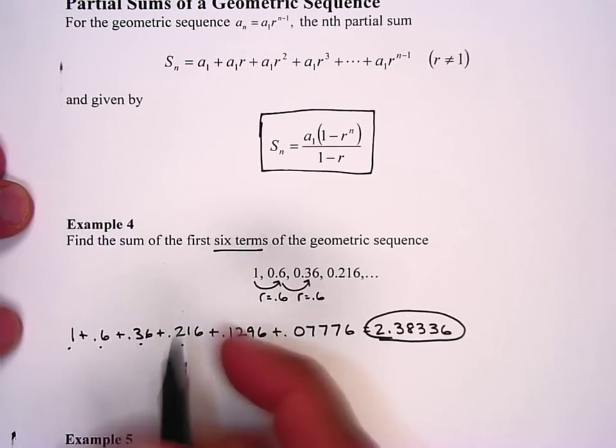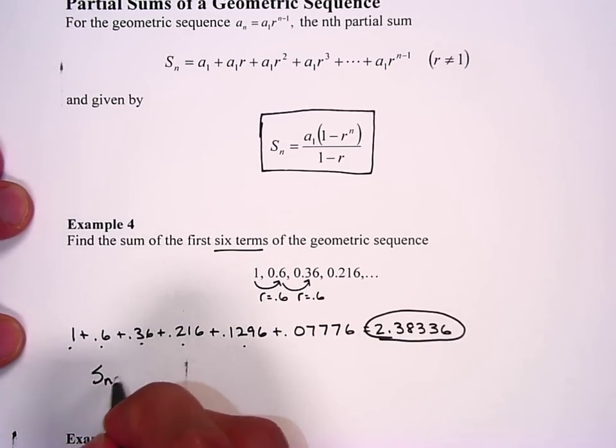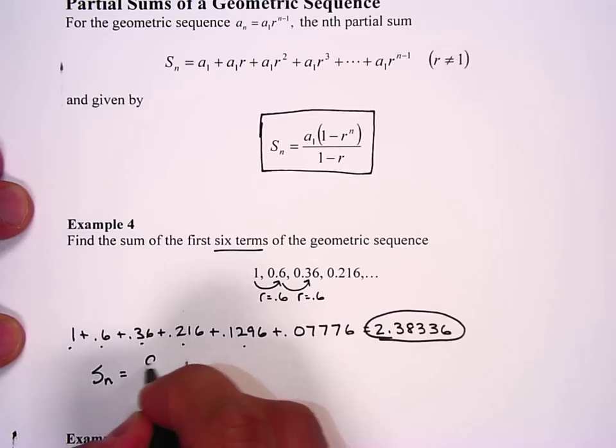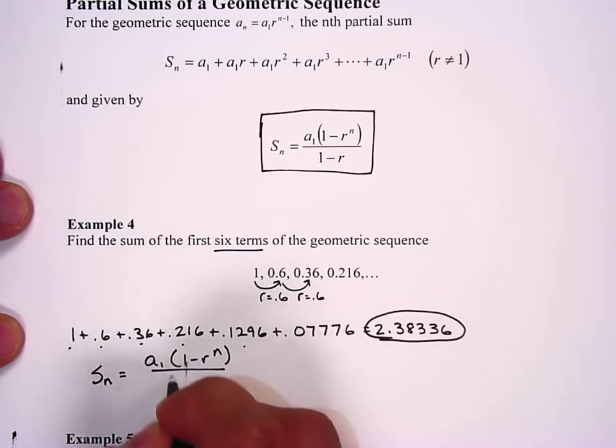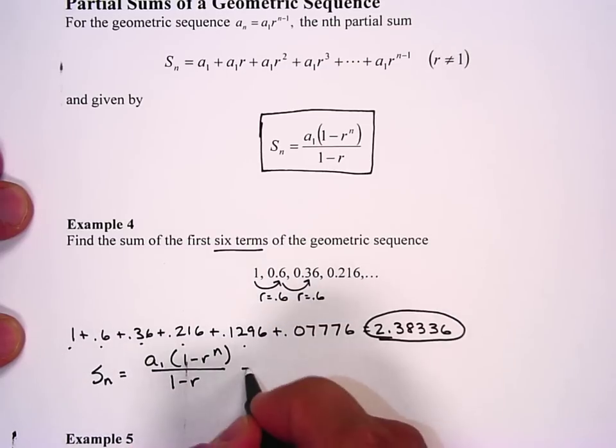I'm a formula kind of guy so I would like to know how this goes in the formula. The formula is S sub n equals a sub 1 times (1 - r^n) all over (1 - r).